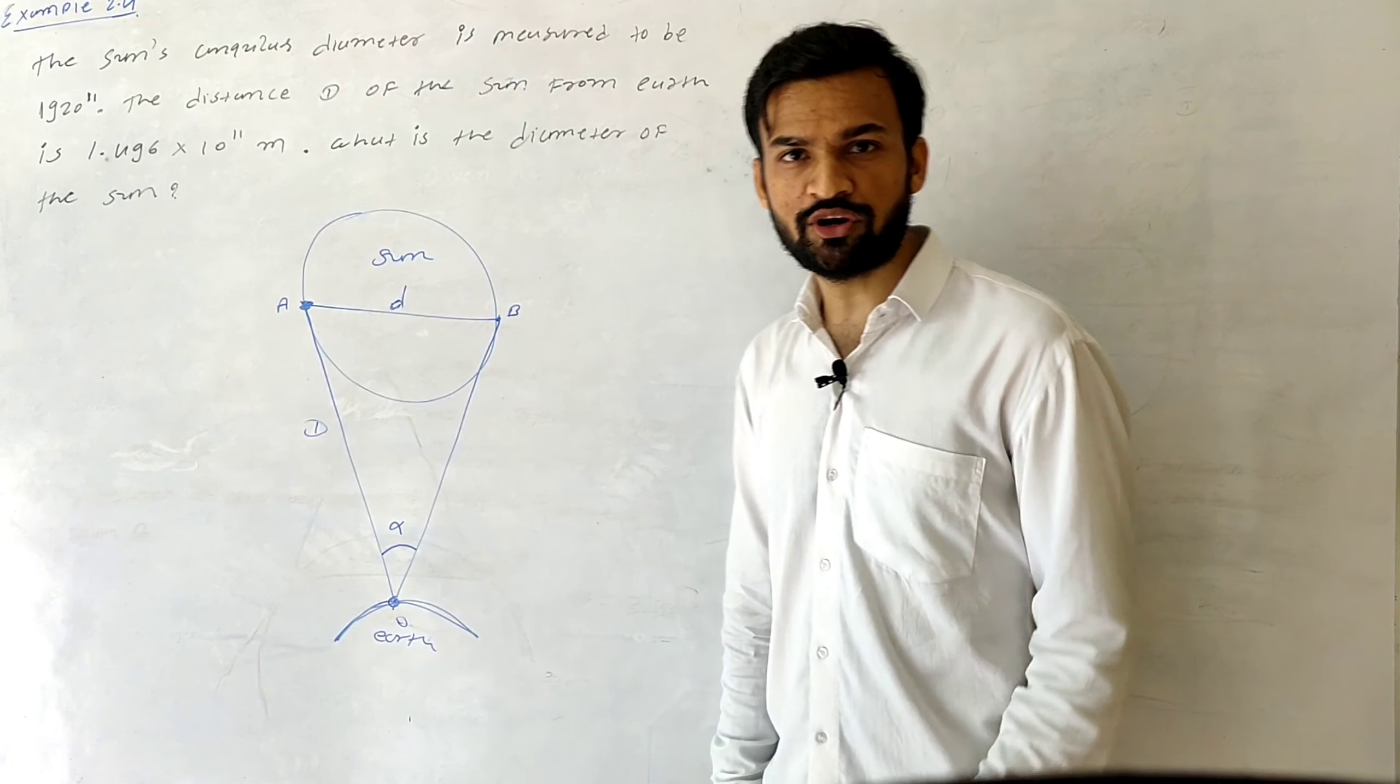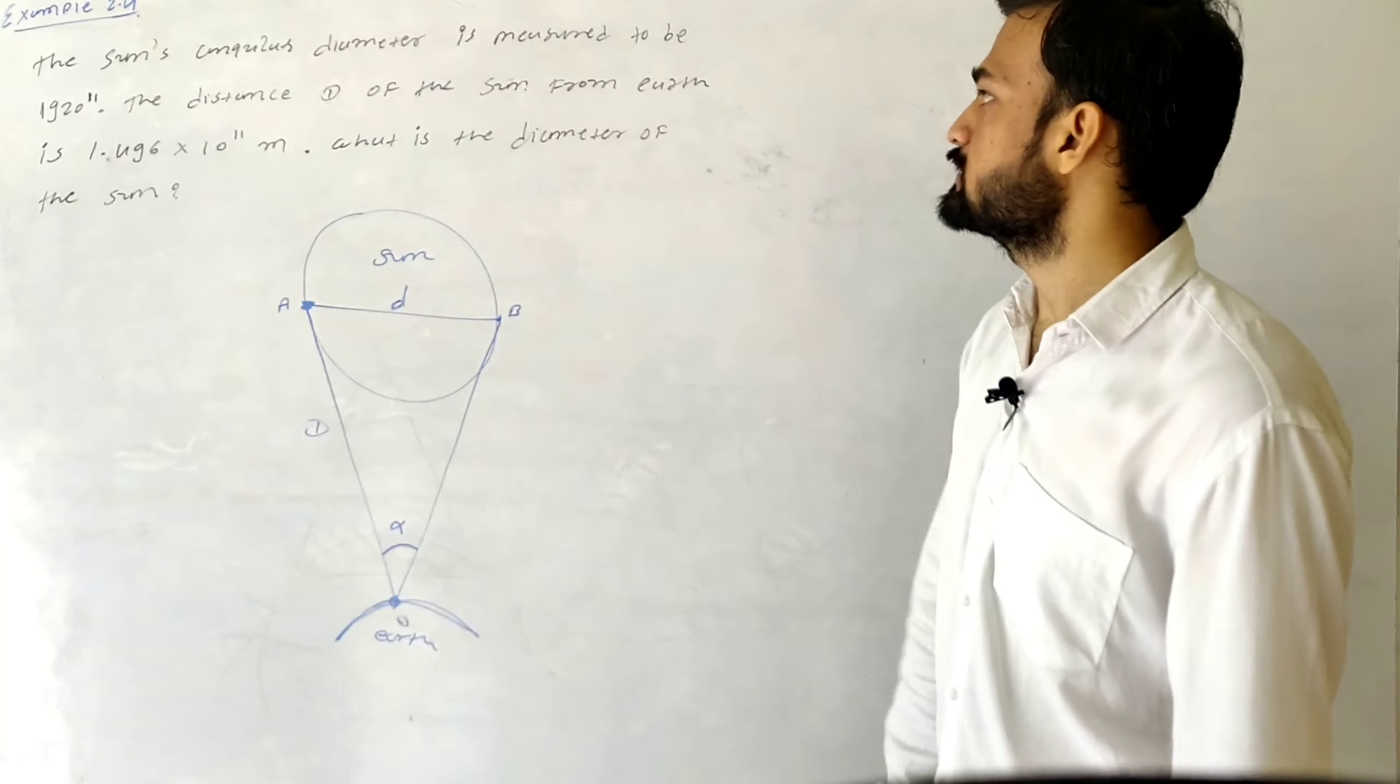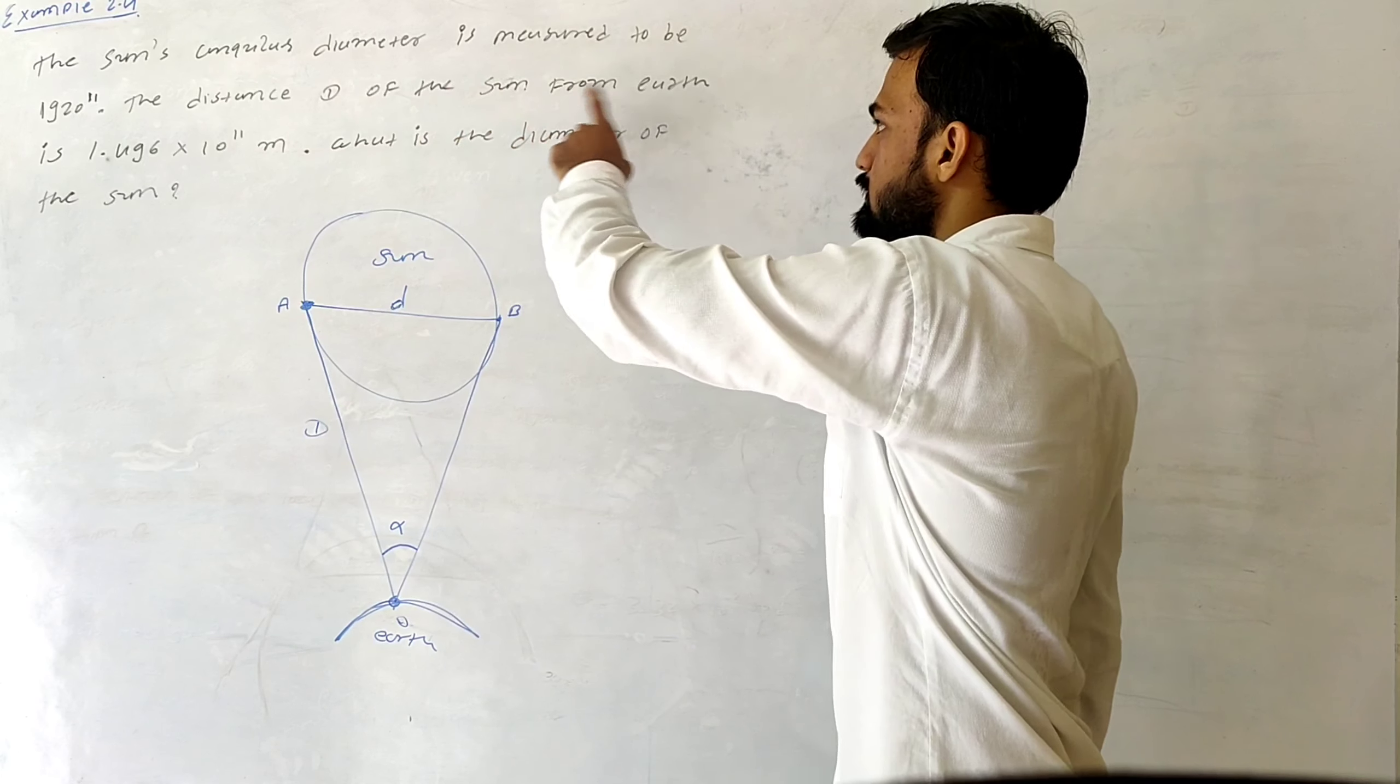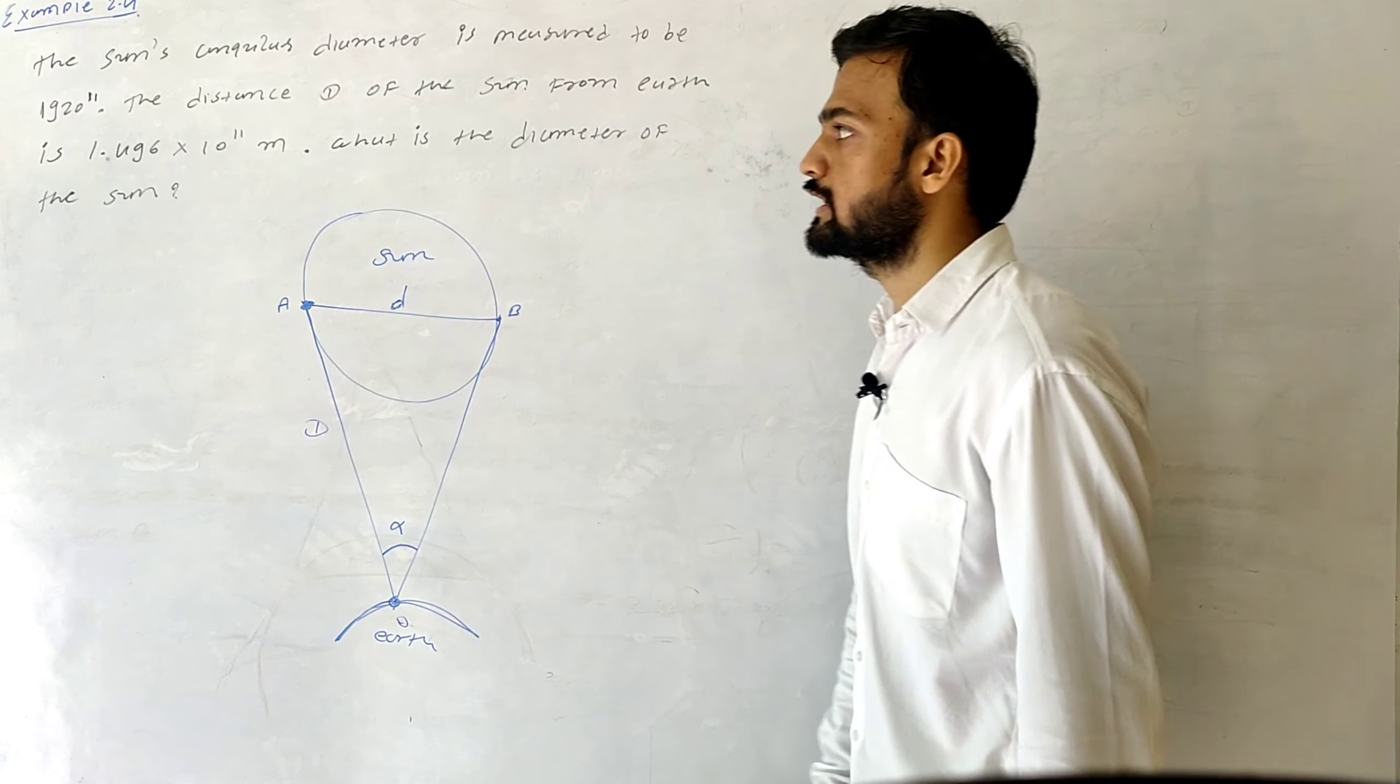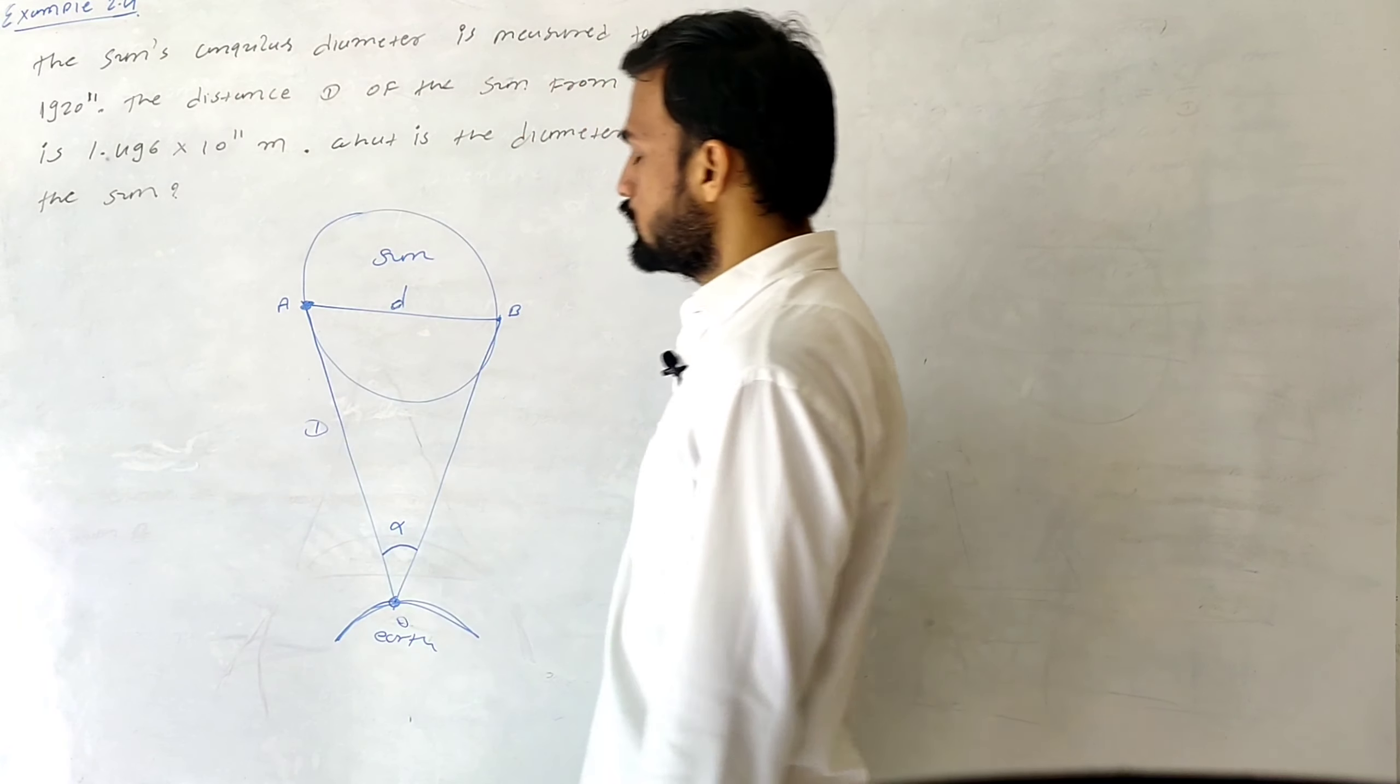Let's see example number 2.4. The angular diameter of the sun is measured to be 1920 seconds. The distance D of the sun from Earth is 1.496 × 10^11 meters. What is the diameter of the sun?